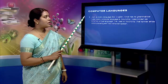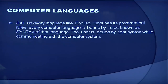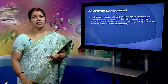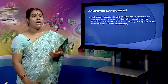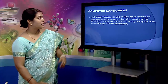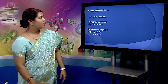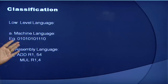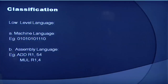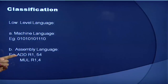We have different computer languages also. Just as we speak Hindi and English to understand each other, computers also need a particular language with some syntax. We have different classifications of computer language. We have low level language: machine language, which is in terms of zeros and ones, was used in the very beginning. Then we have assembly language, wherein we use mnemonics in the form of ADD and MUL — ADD indicates addition, MUL indicates multiplication.